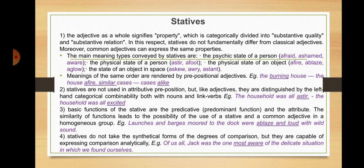Meanings of the same order are rendered by prepositional adjectives — for example, 'the burning house', 'the house on fire', 'similar cases', 'cases alike'. Statives are not used in attributive preposition, but like adjectives they are distinguished by left-hand categorical combinability both with nouns and link verbs: 'The household was all astir', 'The household was all excited'. The basic functions of the stative are the predicative and the attribute. The similarity of functions leads to the possibility of using a stative and a common adjective in a homogeneous group — for instance, 'launches and barges moored to the dock were ablaze and loud with wild sound'.